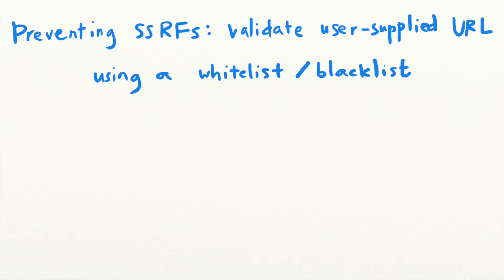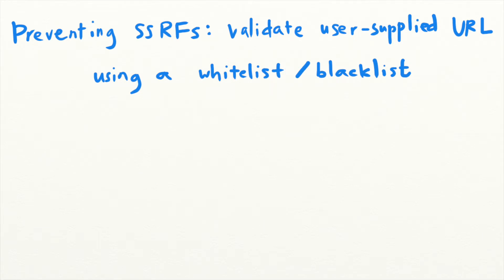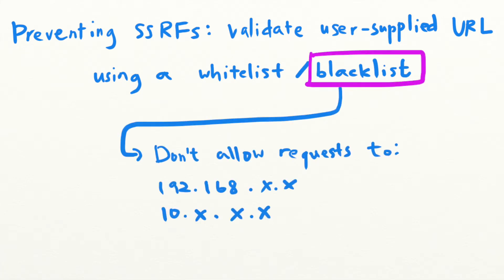First, you can check if the URL belongs to an approved whitelist if you know where you need to fetch your resources from. For example, if you're only fetching images from a particular server, you can limit requests to that IP address or hostname. On the other hand, if you need to allow users to fetch resources from arbitrary locations, you need to use a blacklist to restrict access to sensitive internal resources.